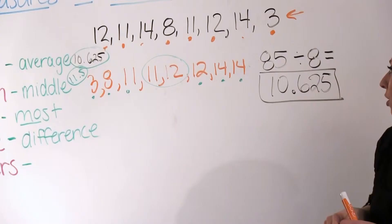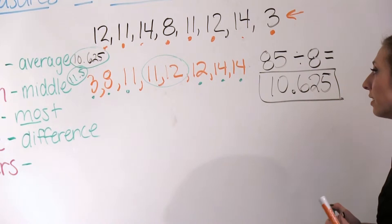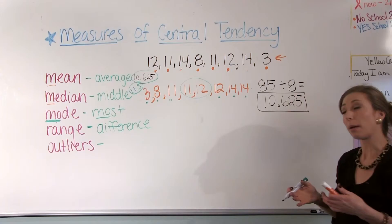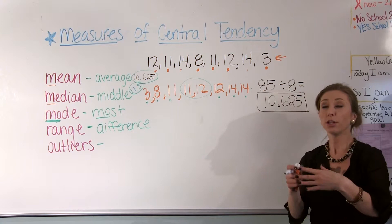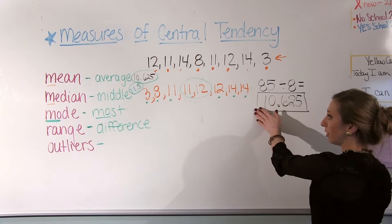Mode is something that occurs the most. Something that people don't know all the time is that you can have more than one mode. You also might not have a mode. If we had a list of all different numbers, there wouldn't be a mode because there wouldn't be some number that occurs the most.